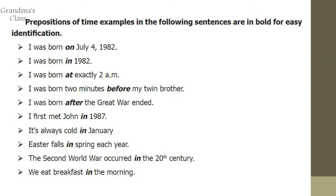For example: I was born on July 4th, 1982. I was born in 1982. So, for a date we use 'on', for time we use 'at', and for a year or long period of time, we use 'in'. Examples: I first met John in 1987. It is always cold in January. Easter falls in spring each year. The Second World War occurred in the 20th century. We eat breakfast in the morning.